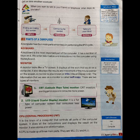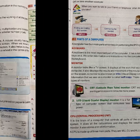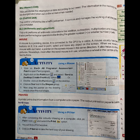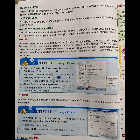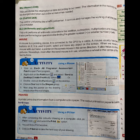Our CPU is made up of three parts: MU, CU, and ALU. MU — Memory Unit: this unit stores the information or data according to our need. The information in the memory can be changed and taken out on screen when needed. CU — Control Unit: the control unit works like a traffic policeman — it controls and manages the working of all parts of a computer. ALU — Arithmetic and Logical Unit: this unit performs all arithmetic calculations like addition, subtraction, multiplication, and division, and also performs logical operations like finding the greater or smaller number.